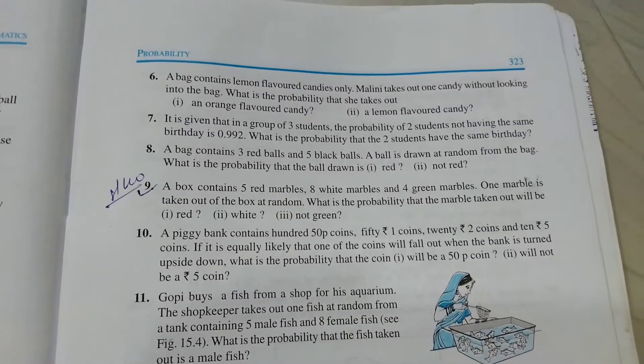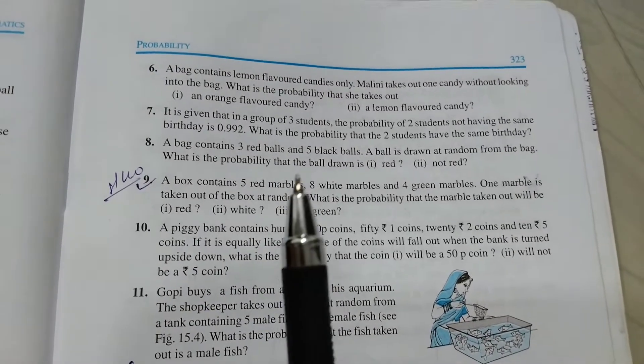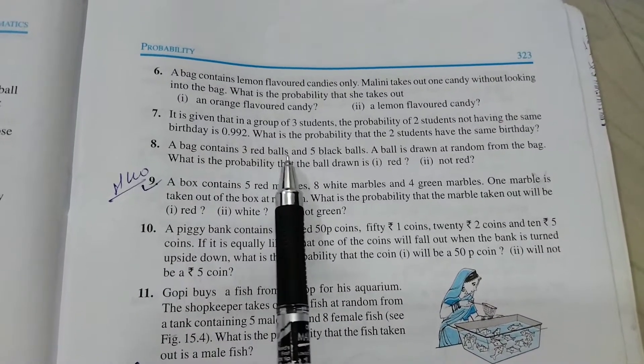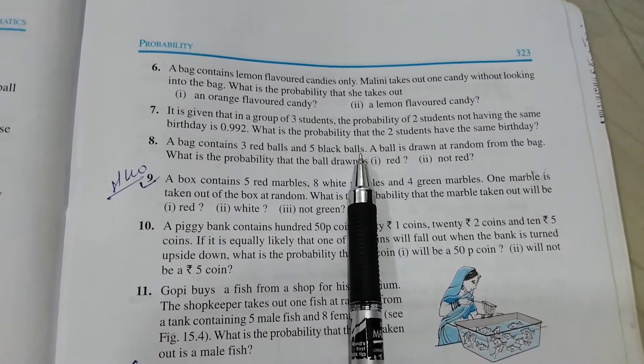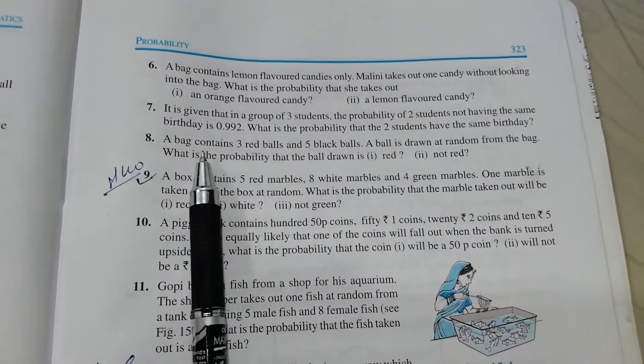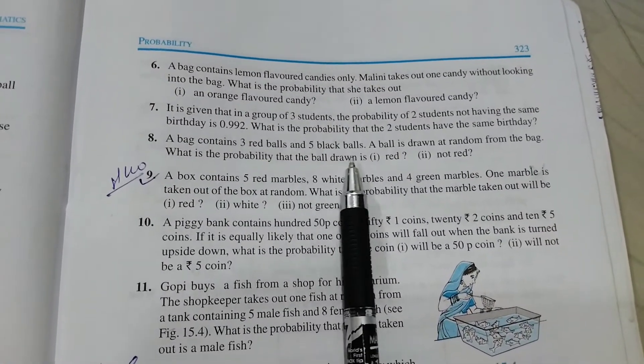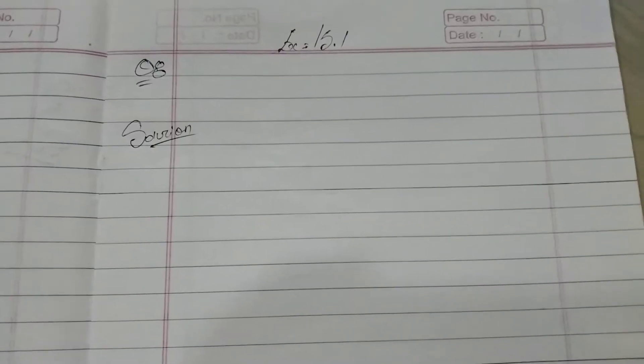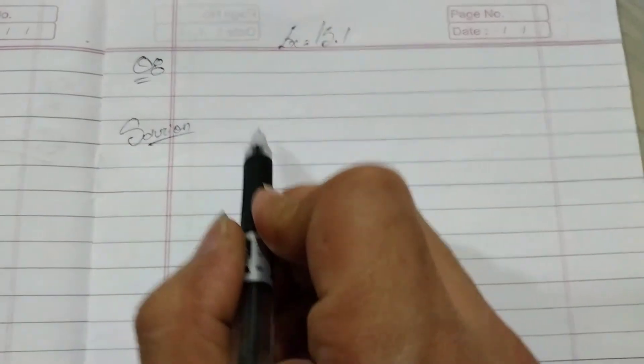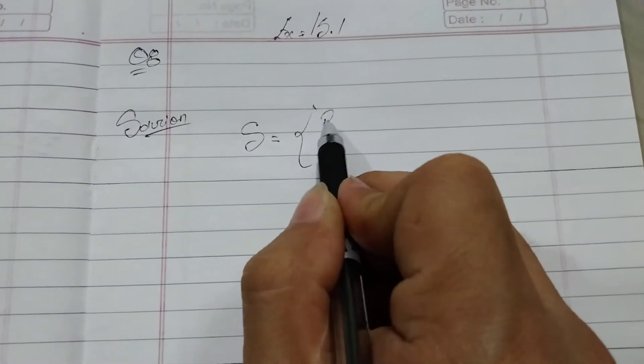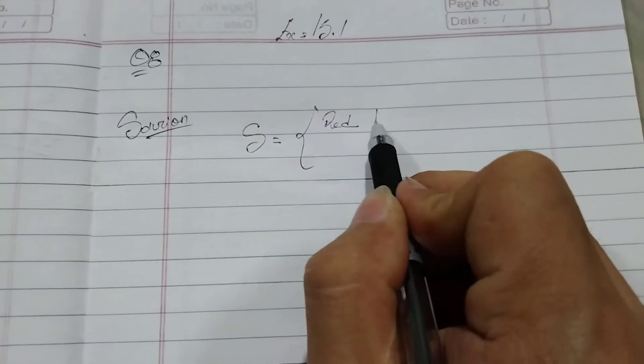Okay, we are going to do question 15.1, question number 8. The question is: a bag contains three red balls and five black balls. A ball is drawn at random from the bag. What is the probability that the ball drawn is number one, red, and number two, not red? We'll start the solution with the sample space.